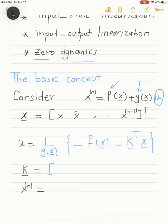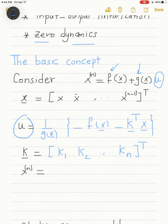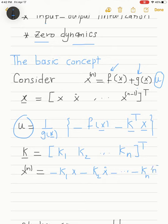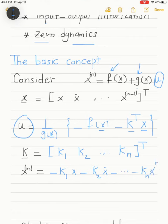Here k is composed of real numbers k1 up to kn. If we substitute this control law back into the differential equation, we get the nth derivative of x equal to minus k1·x minus k2·x-dot, and so on, up to kn times the (n−1)th derivative of x.